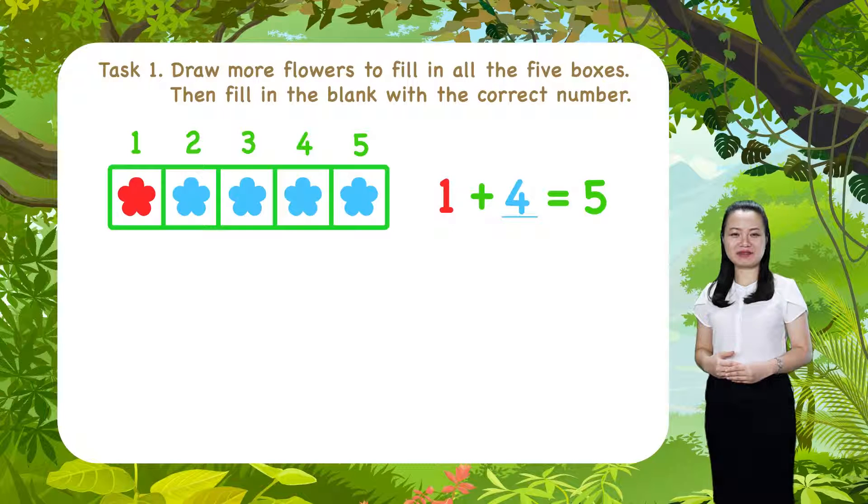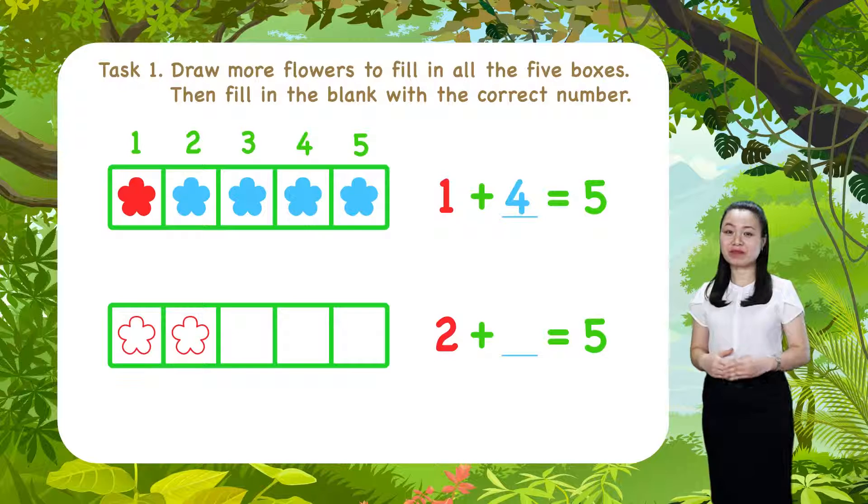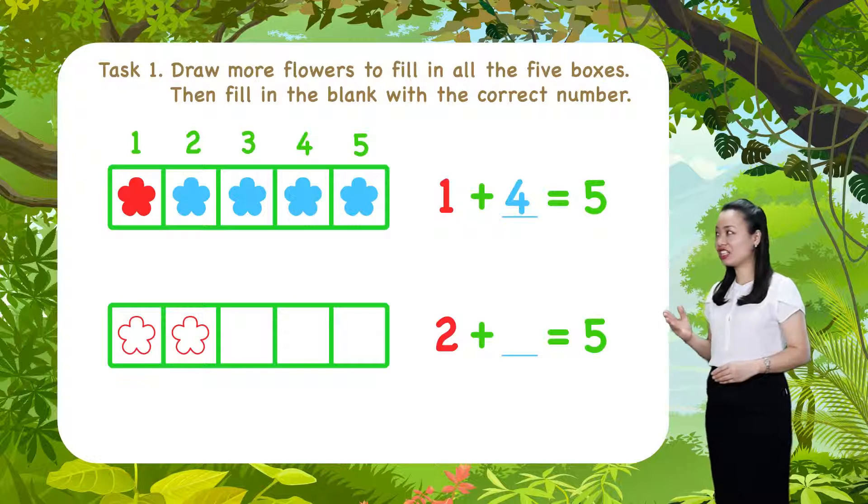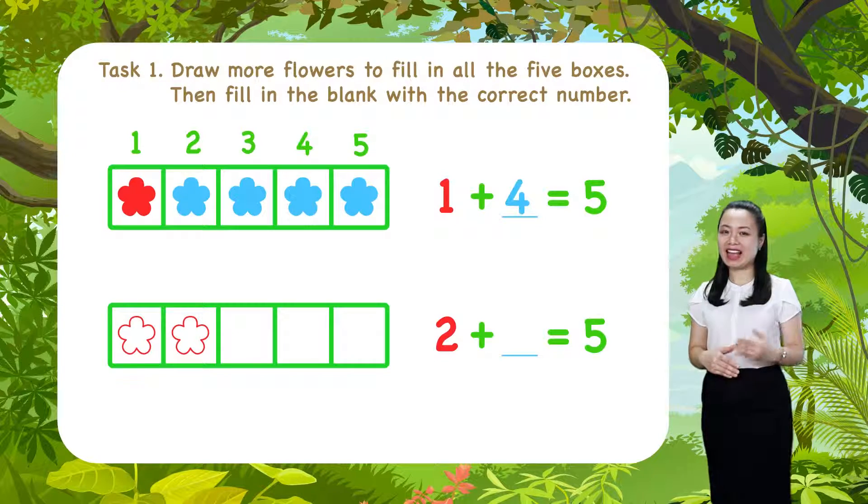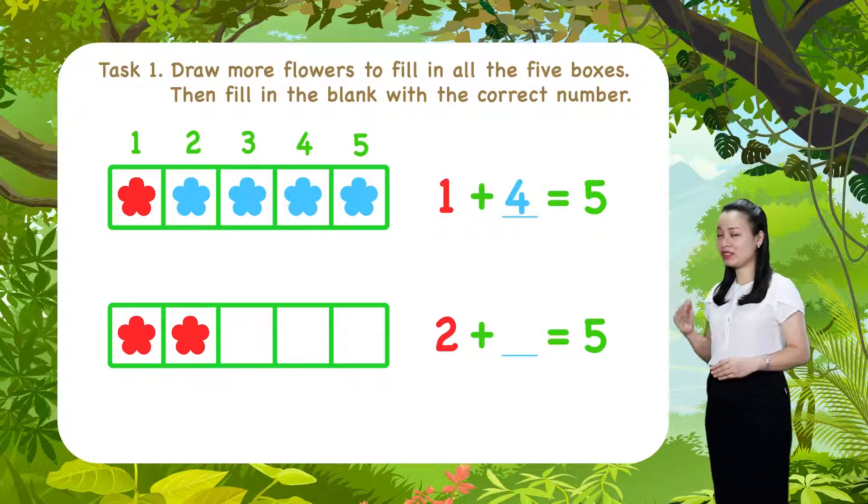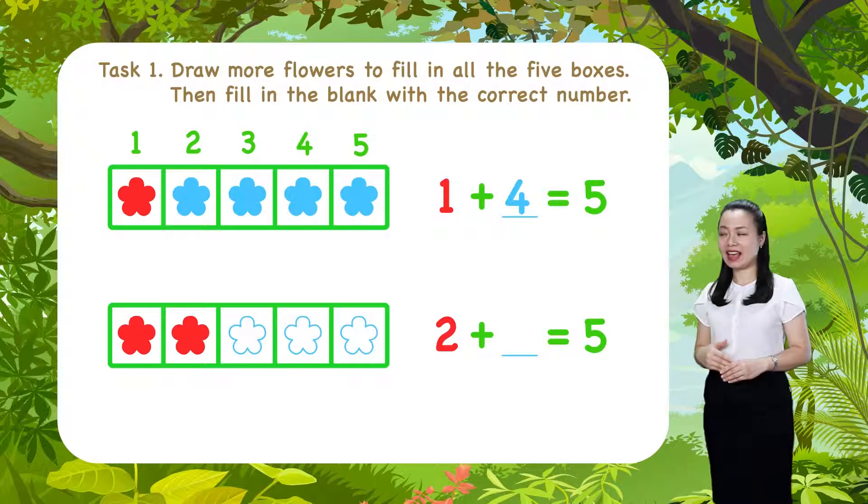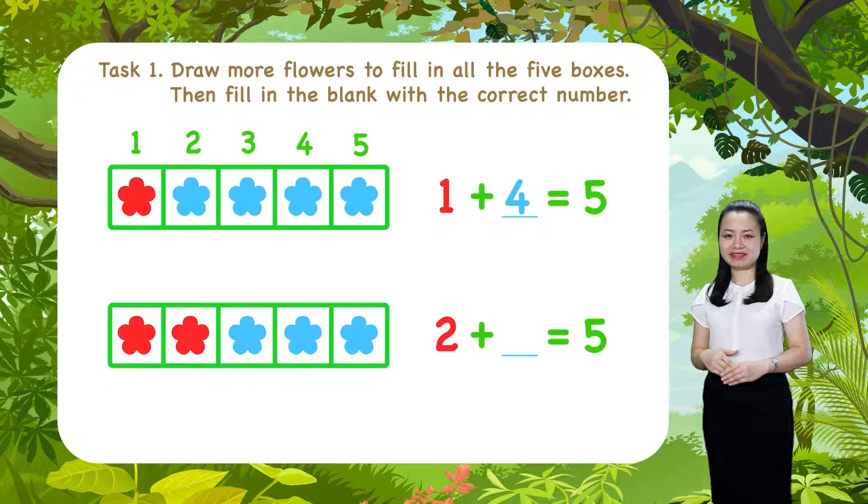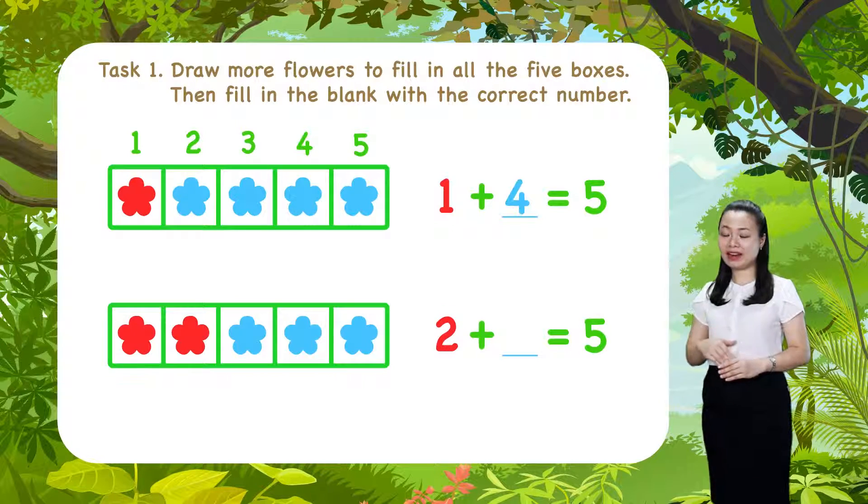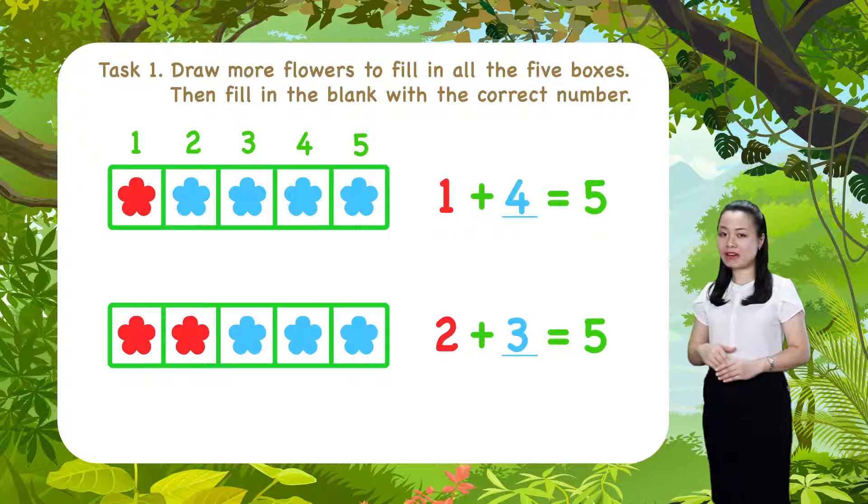Next, the second row. Here, we have two flowers. Let's color them red. Three boxes are still empty. Let's show three more flowers. Color them blue. And you'll see, two plus three equals five.